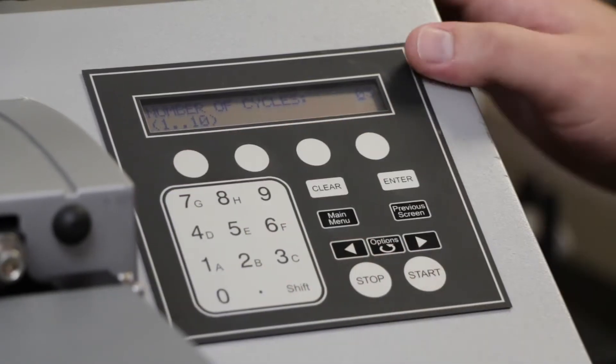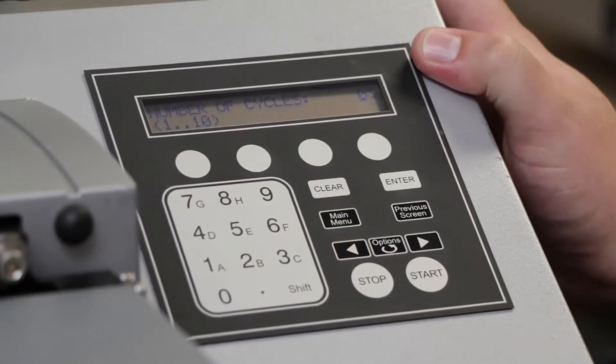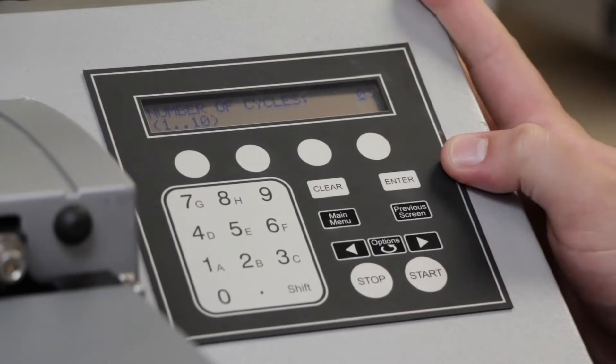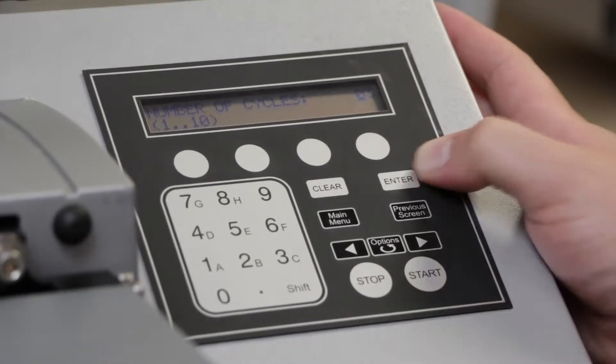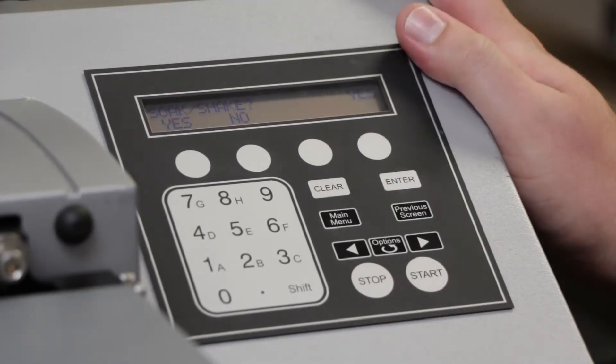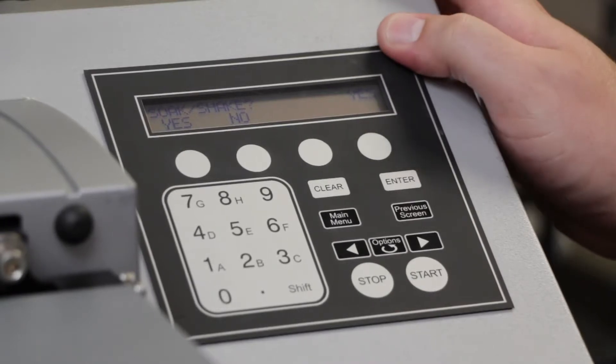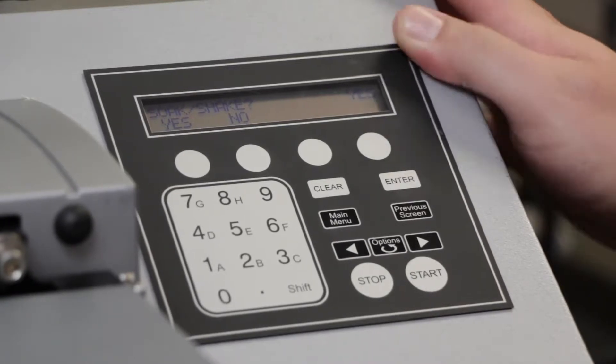Starting with the Method option, we'll define how many cycles we want in our wash, in this case three, and they can be anywhere from one to ten. Next, you're prompted with a soak or shake. In our case, we're going to add both a soak and a shake, so we'll select Yes.